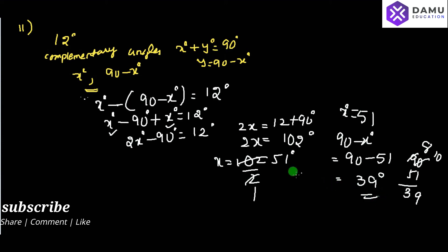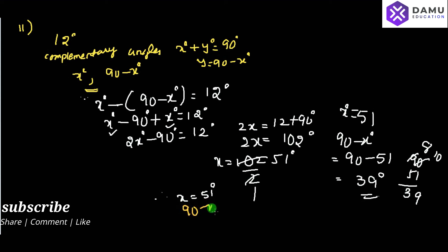So, if both are complementary angles, therefore finally x will be equal to 51 degrees, and the complementary angle — 90 minus x degrees — will be equal to 39 degrees. If you take the subtraction of both, you will get 12 degrees.